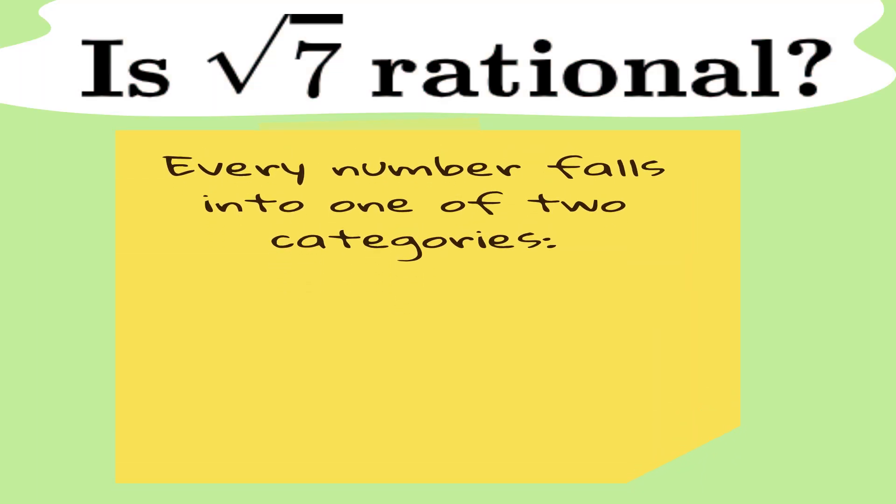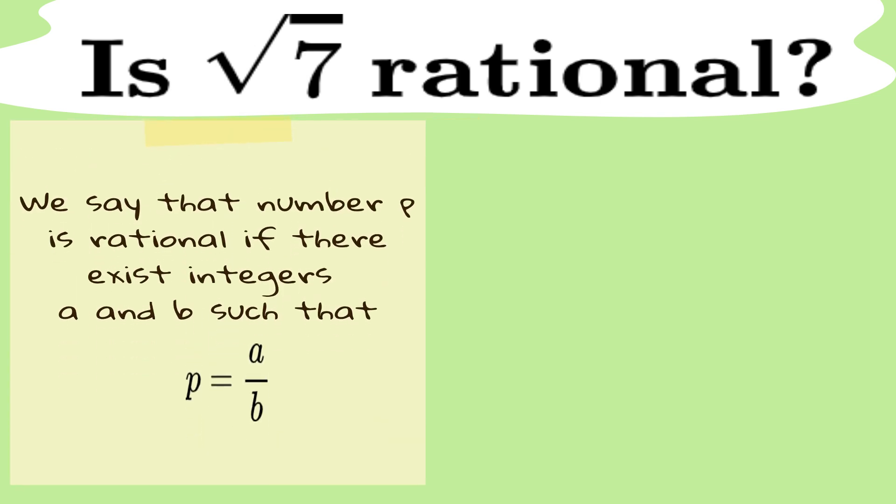Every number falls into one of two categories, rational or irrational. Rational numbers are like the model students of math, neat, orderly, and always able to be written as a fraction, a over b, where both a and b are integers.